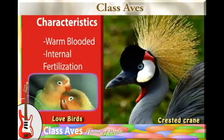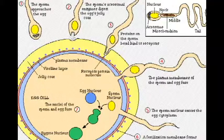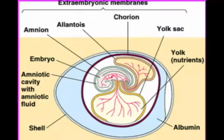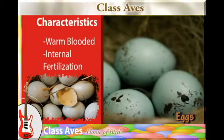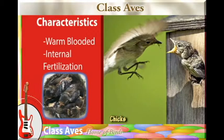These organisms undergo internal fertilization, whereby the male gamete and the female gamete meet inside the female's body and form a zygote. Later in life they lay eggs, which hatch into young ones, and these young ones are taken care of by the adults.